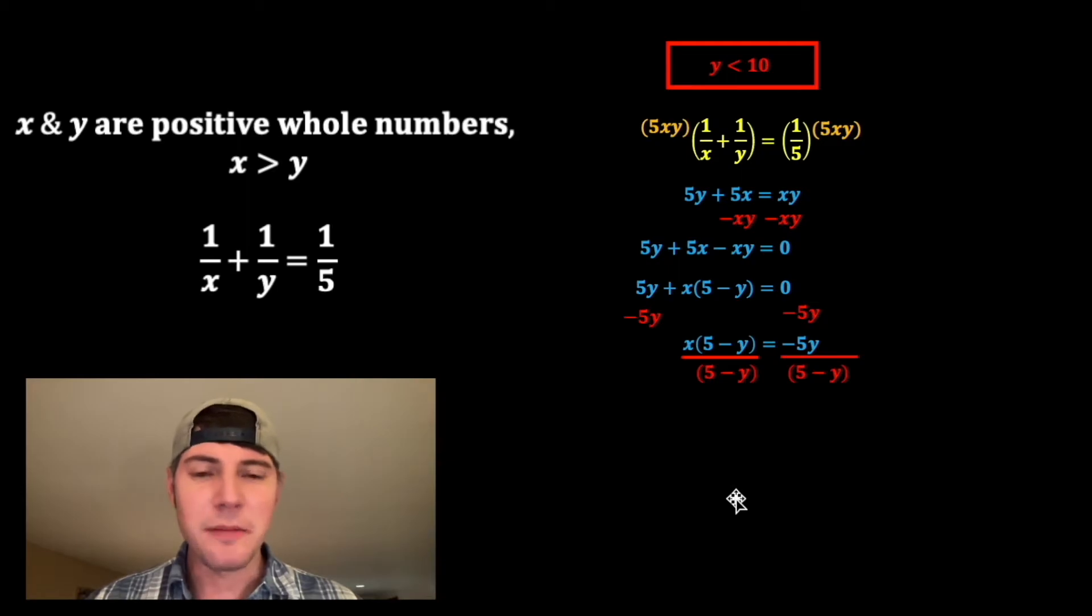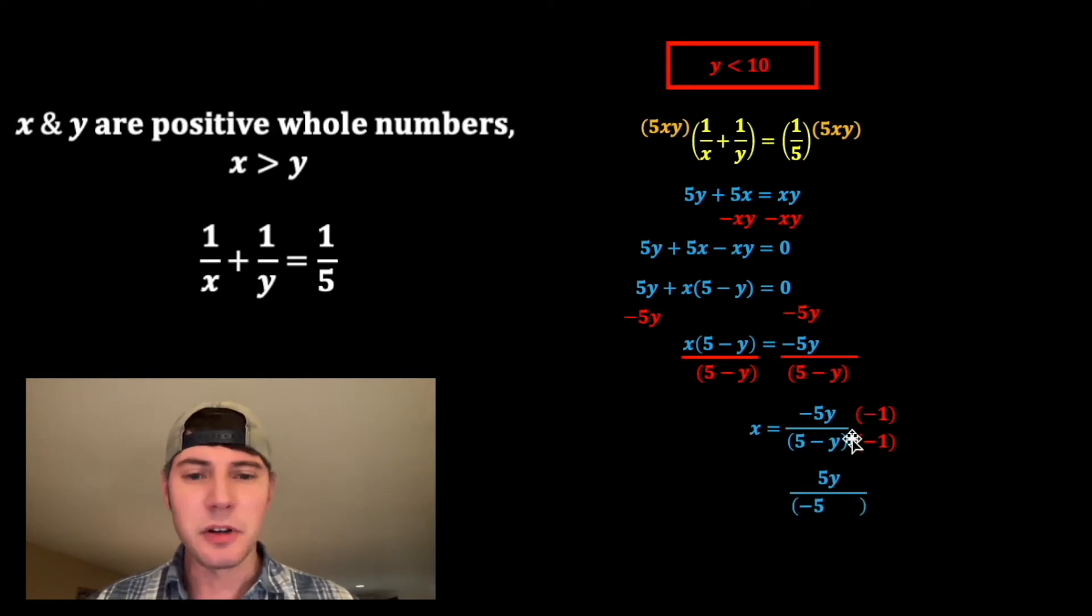Divide both sides by 5 minus y. The left-hand side is x, and the right-hand side is gonna be all this stuff. I don't like this negative here, so I'm gonna multiply top and bottom by negative 1. So the top is just gonna become positive 5y. And the bottom, the negative 1, will multiply by the 5 to give me negative 5. And the negative 1 is gonna multiply by the negative y to give me positive y. So negative 5 plus y, if I change the direction, it becomes y minus 5. And that is what x is equal to.